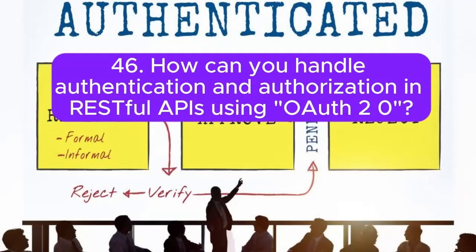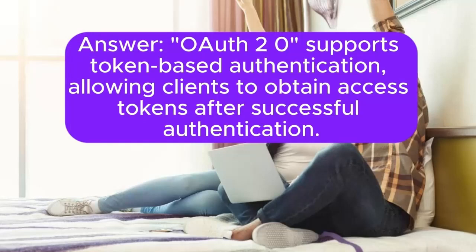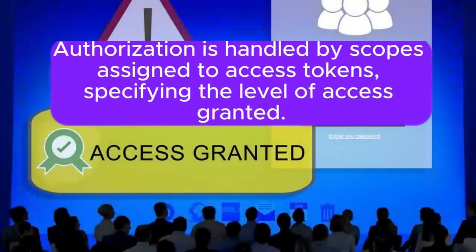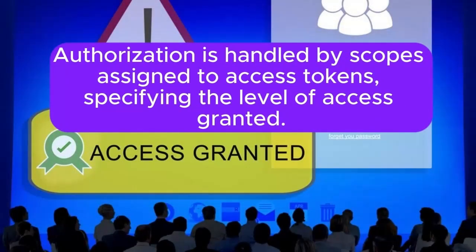Question 46: How can you handle authentication and authorization in RESTful APIs using OAuth 2.0? OAuth 2.0 supports token-based authentication, allowing clients to obtain access tokens after successful authentication. Authorization is handled by scopes assigned to access tokens, specifying the level of access granted.